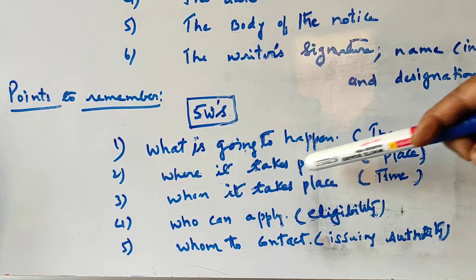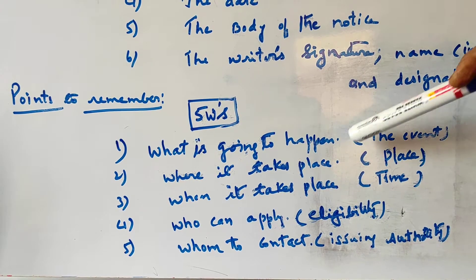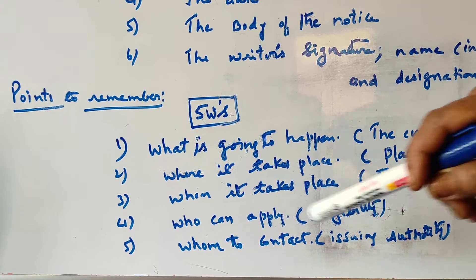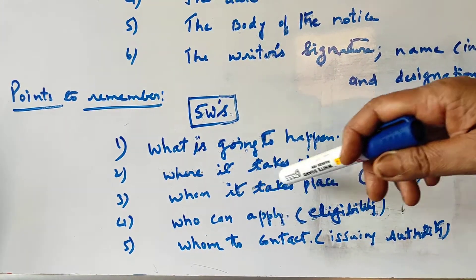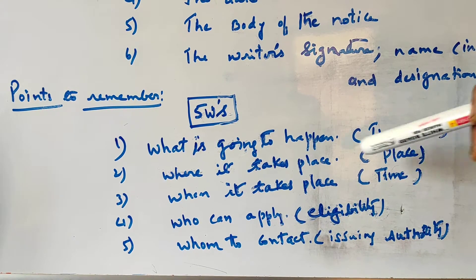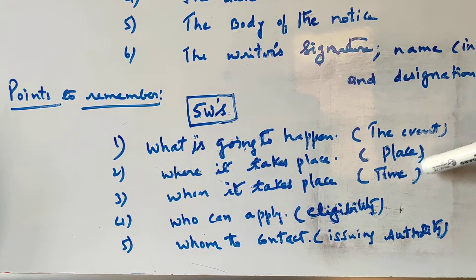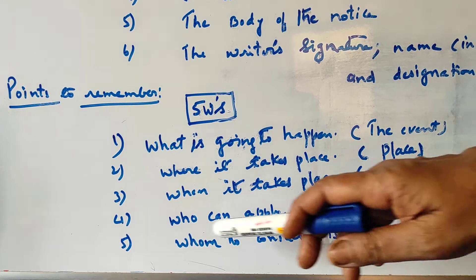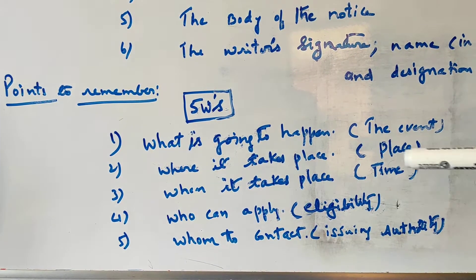Then, where it takes place — so where it will happen. The third one is when it takes place — this is the time. So this is the place and this is the time. Then, who can apply — that means eligibility.